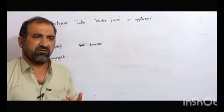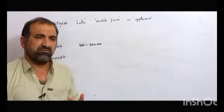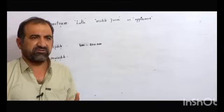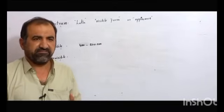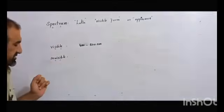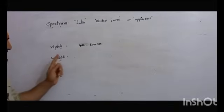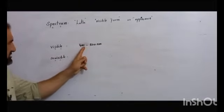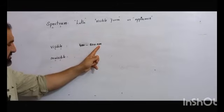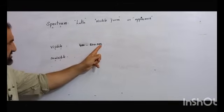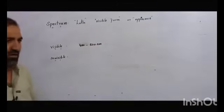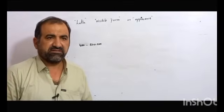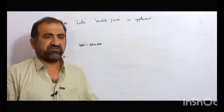The visible spectrum contains seven colors: violet, indigo, blue, green, yellow, orange, and red. Light having wavelength from about 400 to 800 nanometers is visible to our eyes and it is called the visible spectrum, which contains these seven colors.